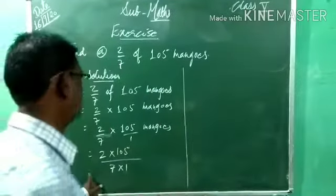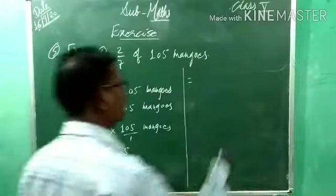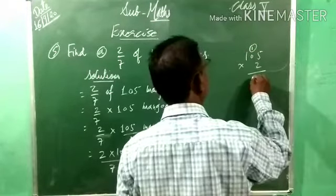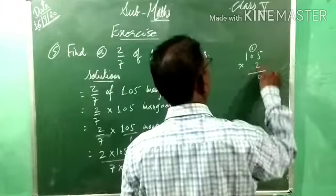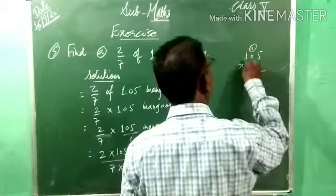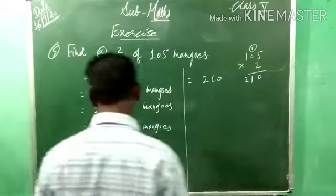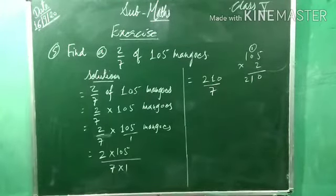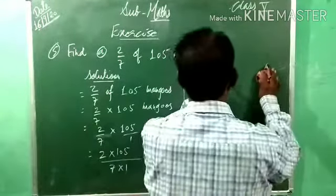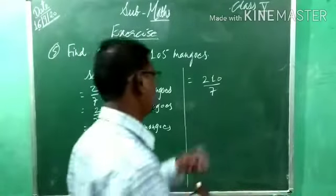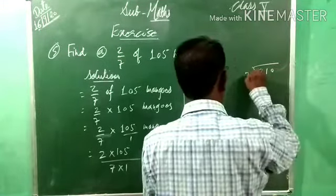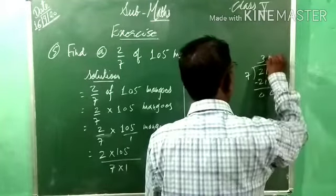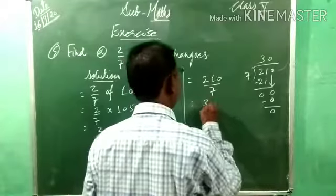Now, 2 into 105: 105 multiplied by 2. 2 fives are 10, carry 1; 2 zeros are 0, plus 1 is 1; 2 ones are 2. So 2 into 105 equals 210. Then 210 divided by 7: 7 threes are 21, bring down 0, 7 zeros are 0. So we are getting 30 mangoes.